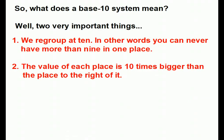You've probably heard teachers mention a base 10 system, but what does that actually mean? It means two really important things. First, it means that we regroup at 10 — you can never have more than 9 in one place. Once you try to fit more than 9 in one place, you have to move up one place to the left. Second, the value of each place is 10 times bigger than the place to the right of it. 100 is 10 times bigger than 10; 10 is 10 times bigger than 1, and so on.